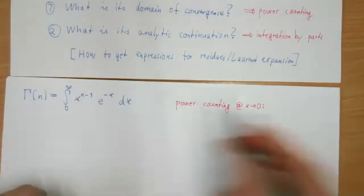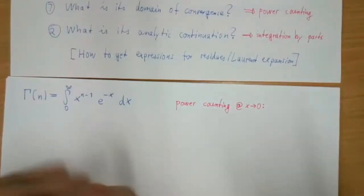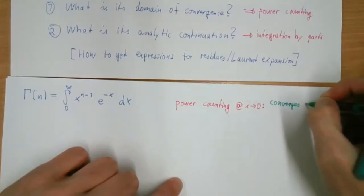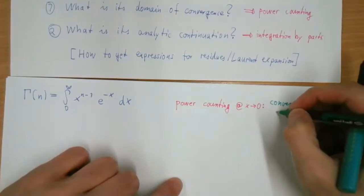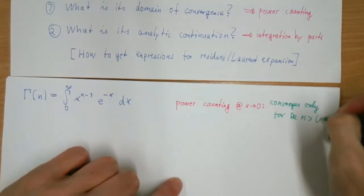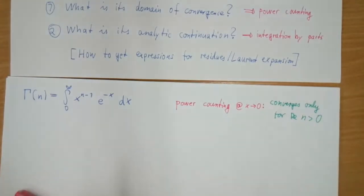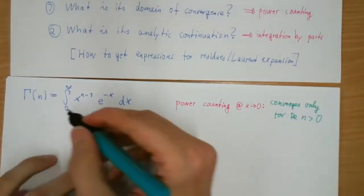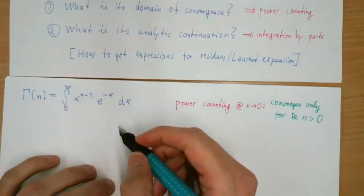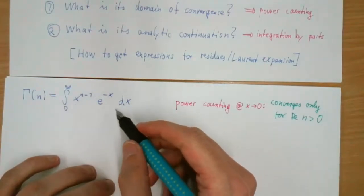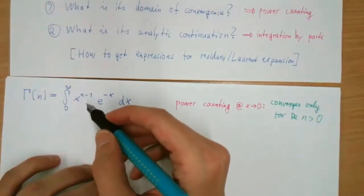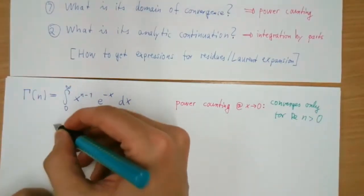By just looking at this, you can see that this integral converges only for the real part of n bigger than zero. So if you just have this integral expression, you only know it converges in some domain, but we want to understand how it extends beyond this domain of convergence.